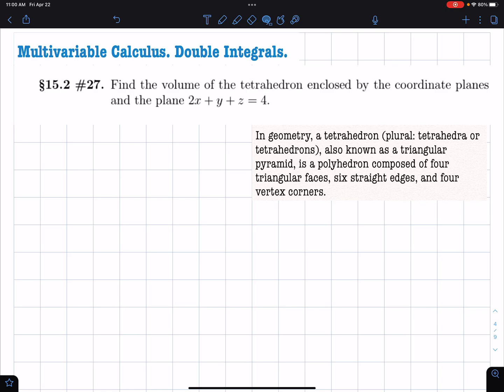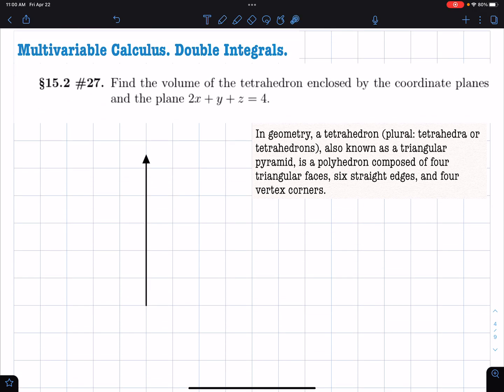Hello. In this video what we're going to do is find the volume of a tetrahedron, which is in this case a solid bounded by the coordinate planes and the plane 2x plus y plus z equals 4.